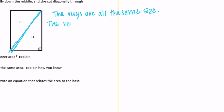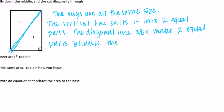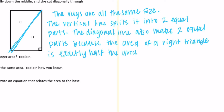So the vertical line splits the rug into two equal — or congruent — parts. The diagonal line also makes two equal parts, because the area of a right triangle is exactly half the area of the rectangle. Therefore all four pieces A, B, C, and D are the same size.